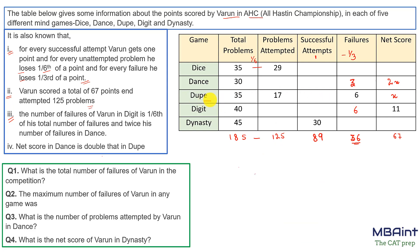Looking at dupe: three of the five columns are fixed so we can find x. Number of unattempted problems is 18. With 17 total attempts and 6 failures, successful attempts = 11. Net score for dupe = 11 × 1 − 3 × (1/6) − 6 × (1/3) = 11 − 3 − 2 = 6. So x = 6 and dance net score = 2x = 12.